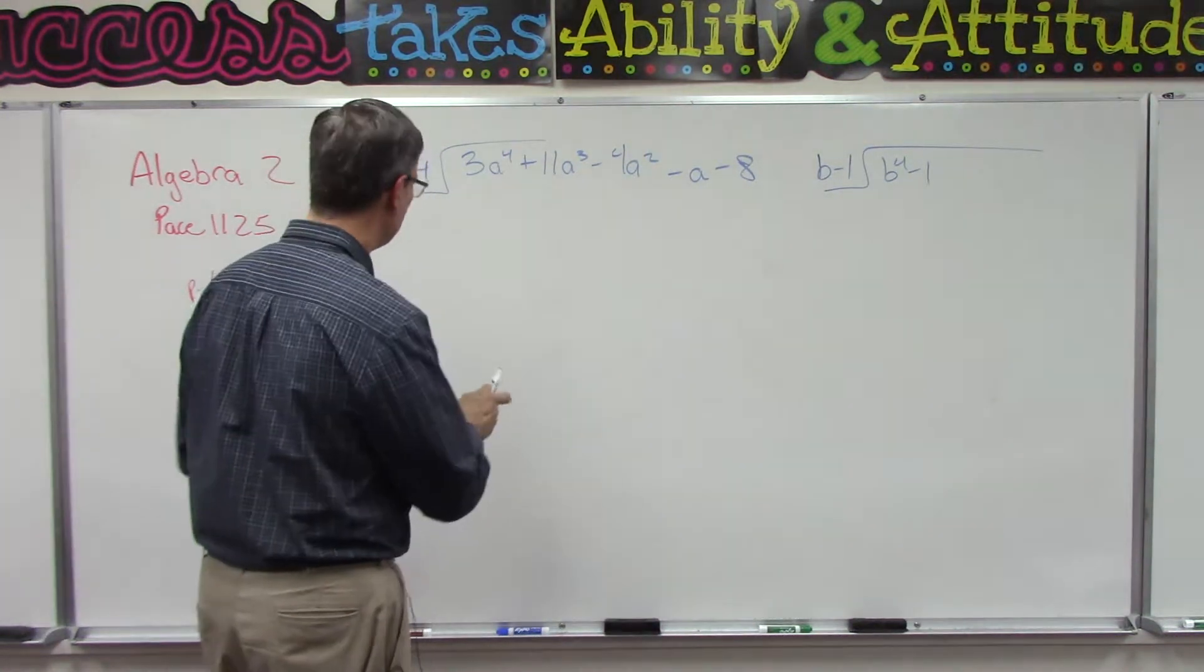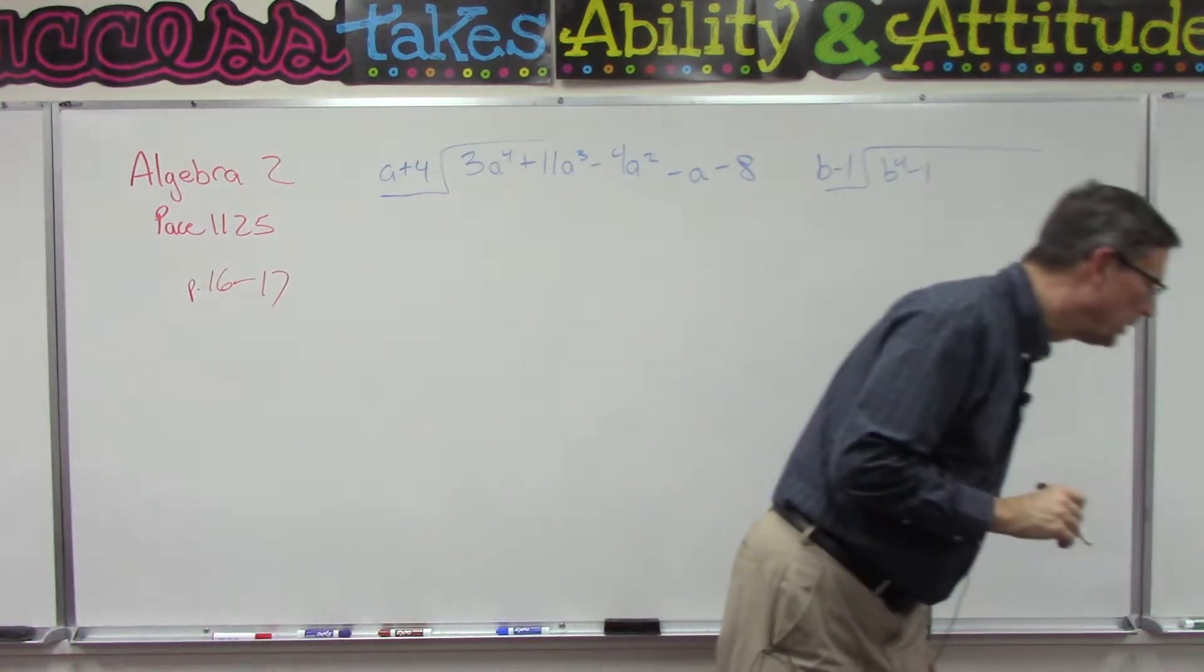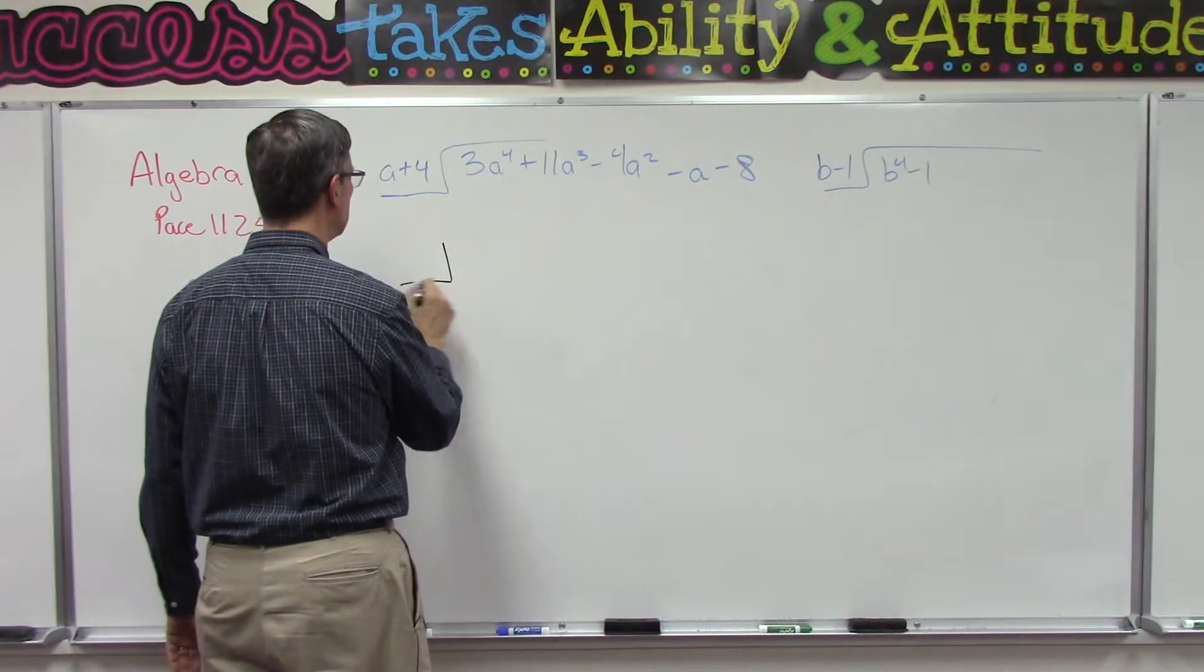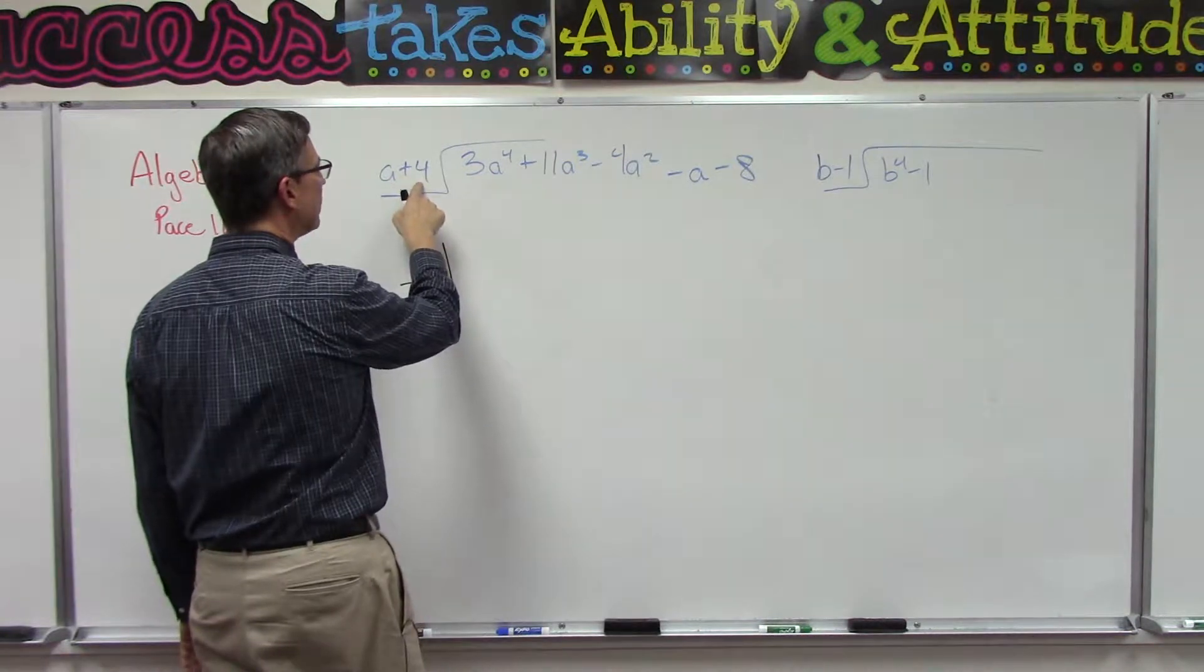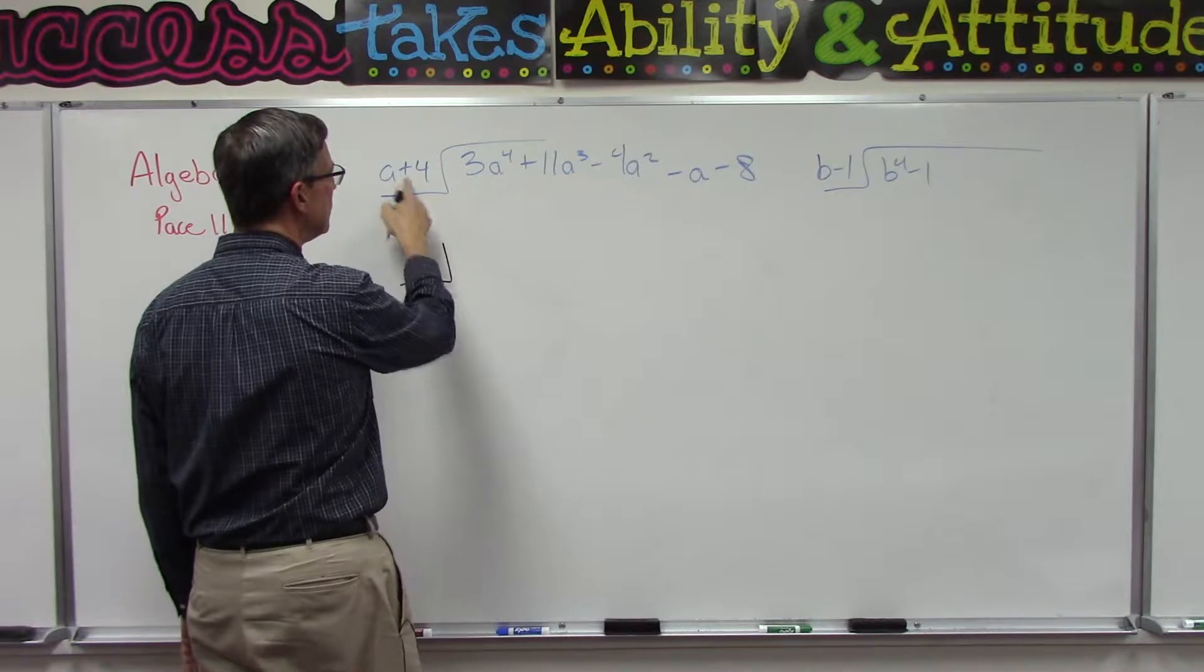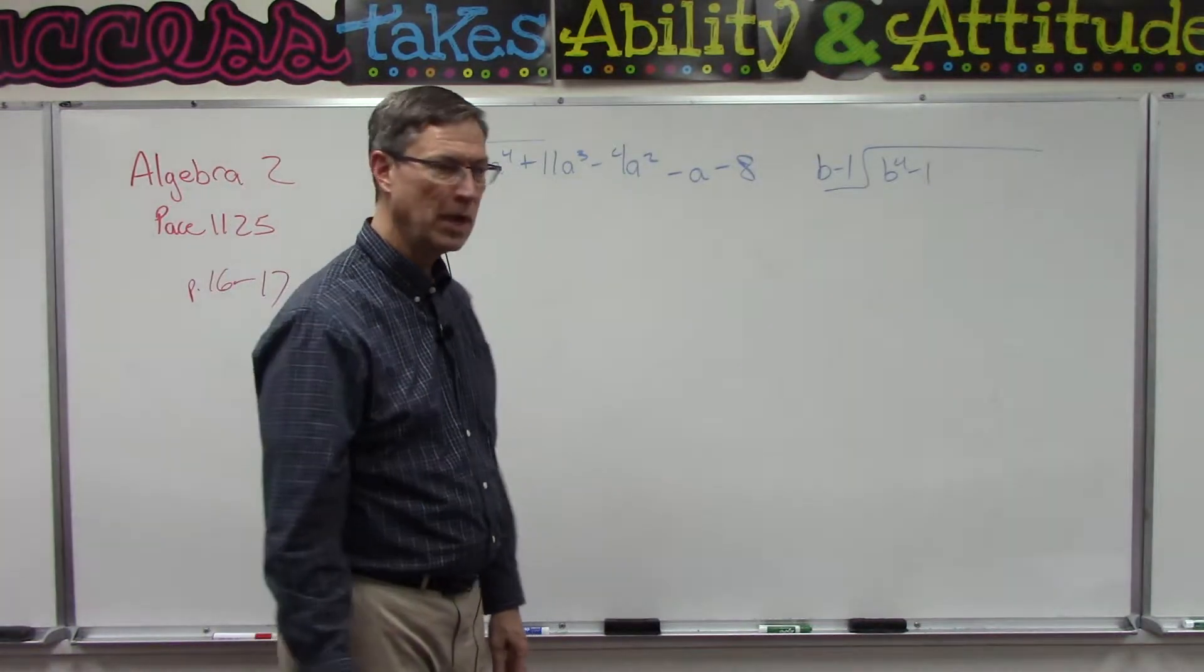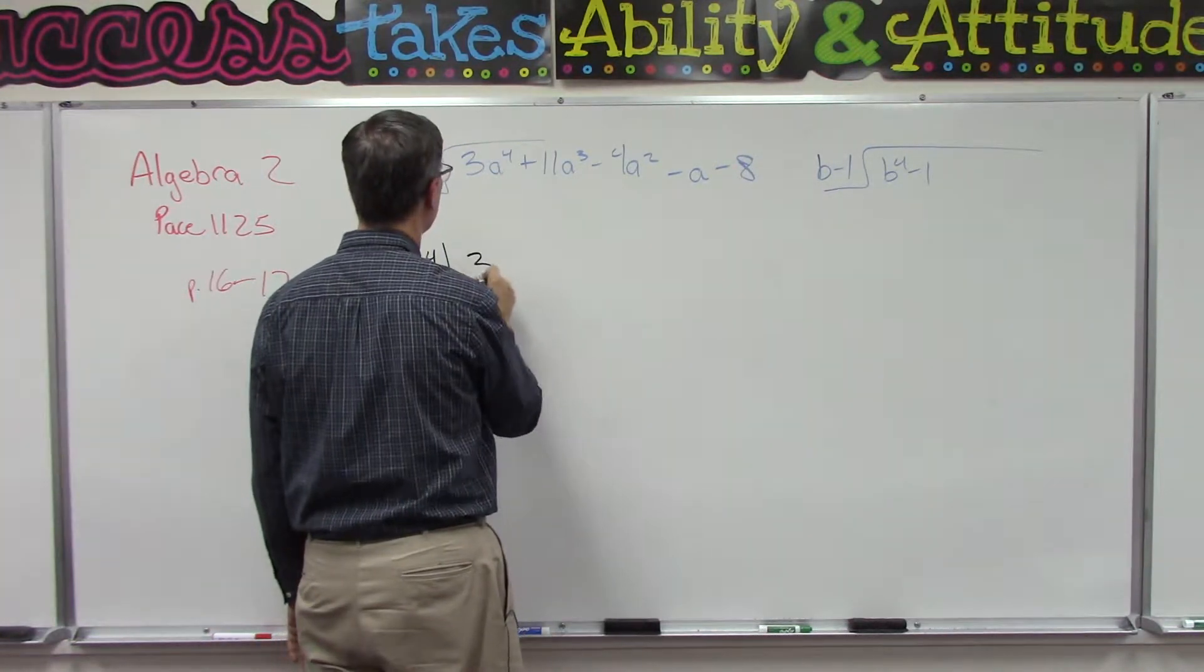First of all, what's the symbol that they use? We're dividing by a plus 4, so they say we're going to change this to its opposite, so we're going to put negative 4 in here. Then we're going to bring down all of these numbers: 3, 11, negative 4, negative 1, negative 8.